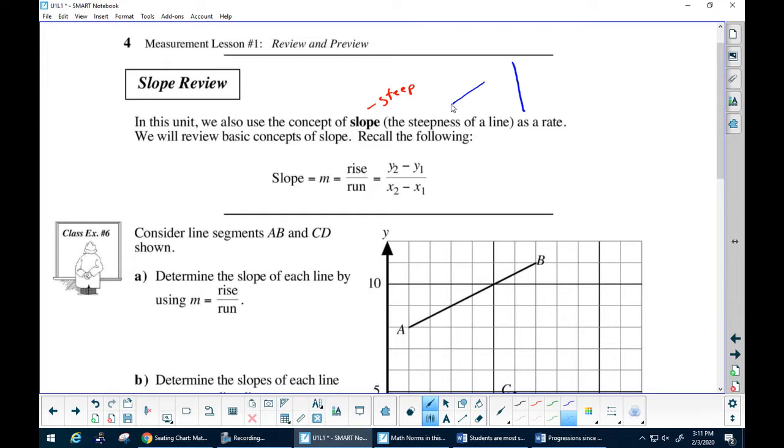Now remember, it's a positive slope when it rises to the right and it's negative slope when it falls, right? So this would be a negative slope and this would be a positive slope.